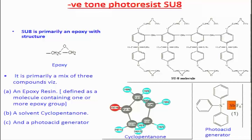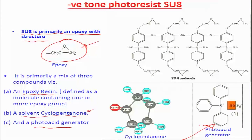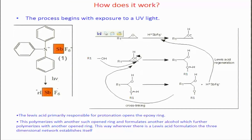Looking at the basics of what changes in the resist: SU-8 has an epoxy structure — a carbon-oxygen-carbon ring. It has three components: an epoxy resin as the base matrix which cross-bonds on exposure to light, a carrier solvent which evaporates during the pre-exposure bake step, and a photo acid generator which is a Lewis acid that generates protons. When the photo acid generator contacts radiation of a fixed wavelength, it generates protons that start affecting the epoxy rings — the proton opens the epoxy ring, and two simultaneously opened rings cross-bond together.